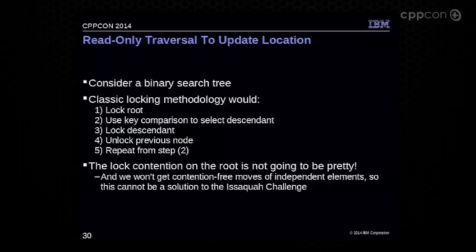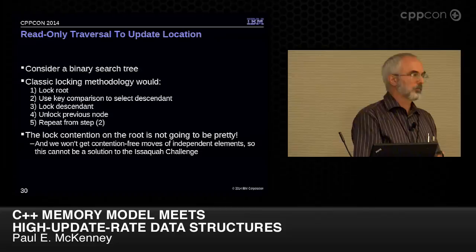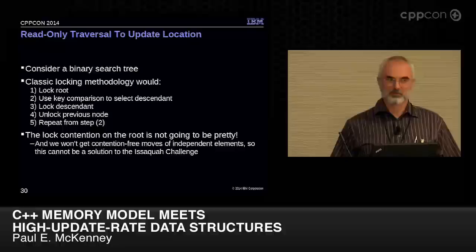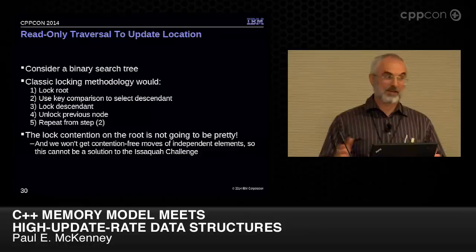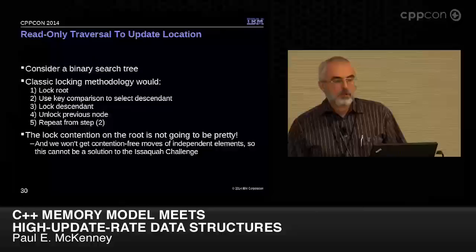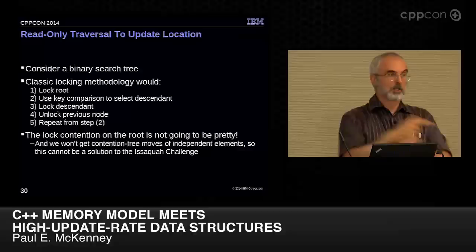The classic methodology for a binary search tree is: lock the root, select a descendant, lock the descendant, unlock the previous node, and repeat from the top. That works and has nice provable properties including linearizability. But the lock contention on the root is not going to be pretty — you might almost as well have a global lock, unless the operations on the leaves are really heavyweight. And if we're doing this for the Issaquah challenge, we need contention-free movement of independent elements between the trees, which hand-over-hand locking won't give us.